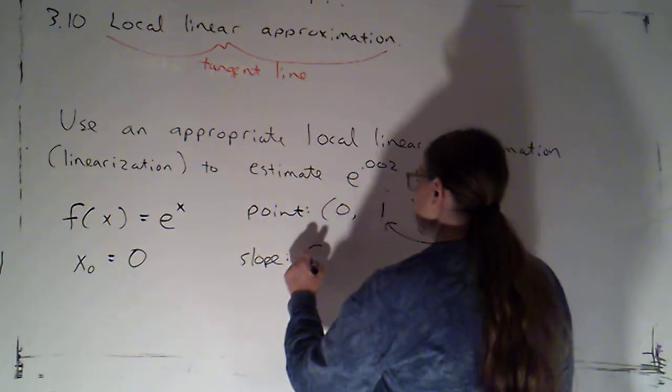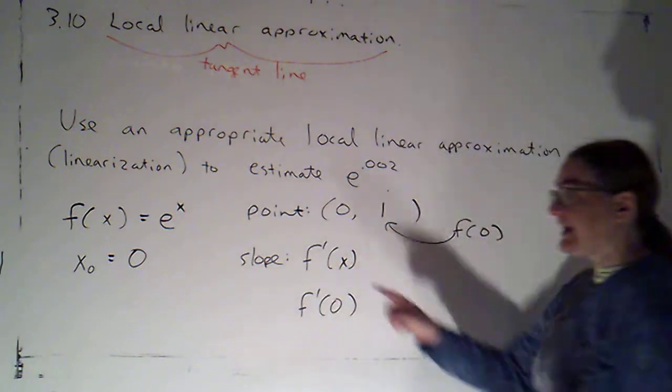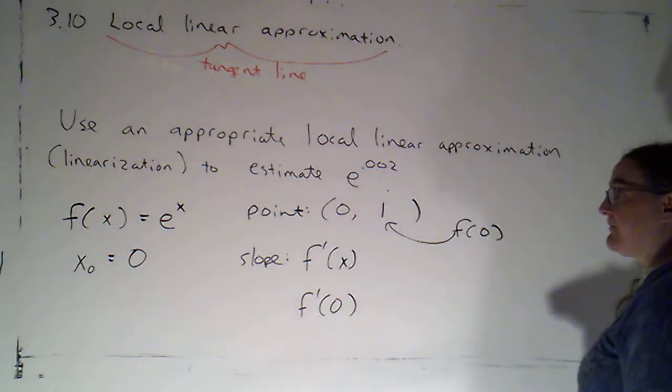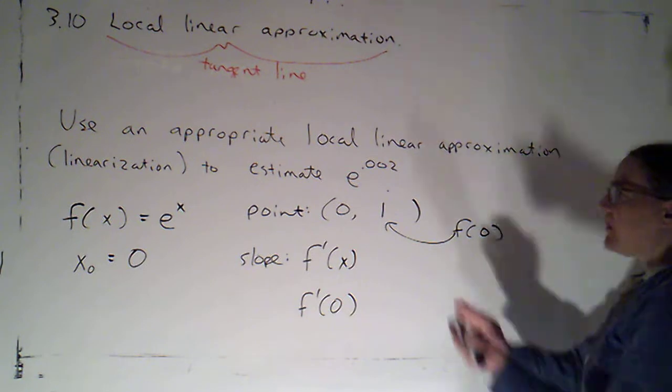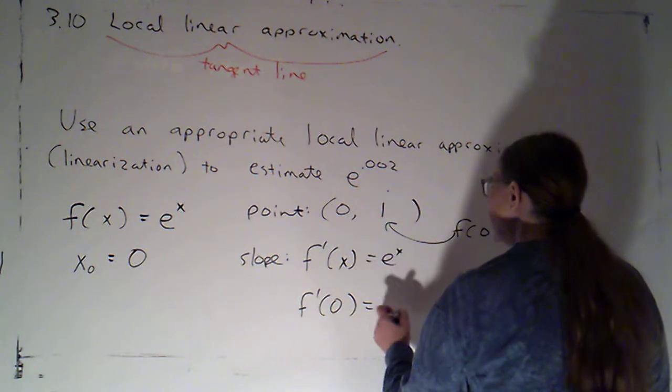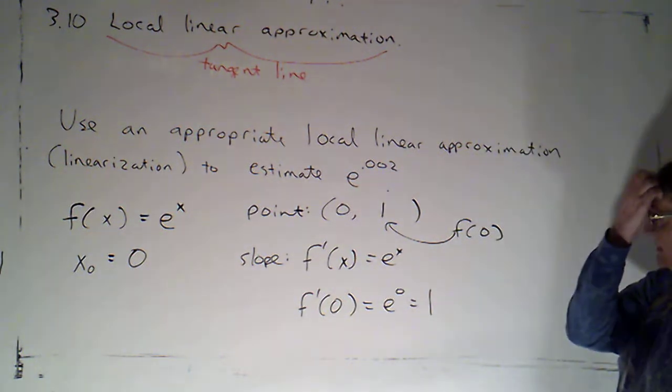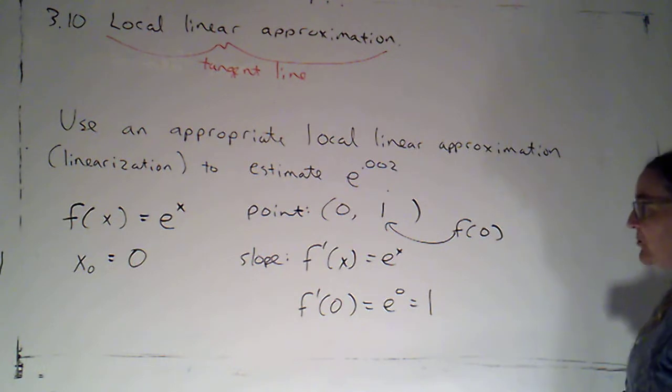The slope, I know that's a two step process. I need to first of all find f prime of x, and then I can plug in zero to get the numeric value for that slope. So f prime of x is just e to the x. F prime of zero is then e to the zero, which is one. So our point is (0, 1) and our slope is one.